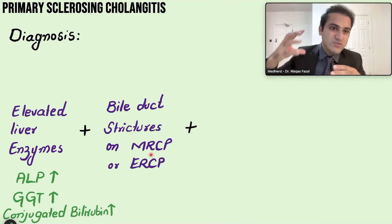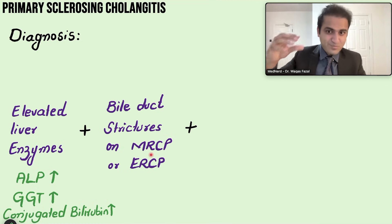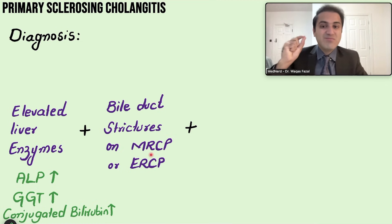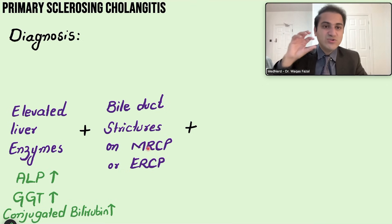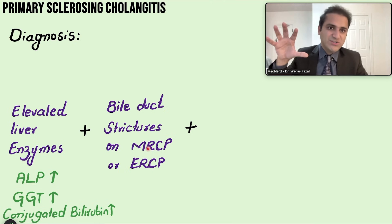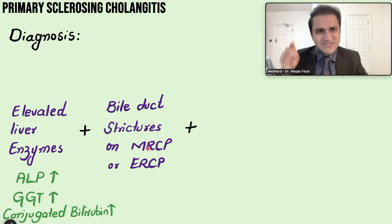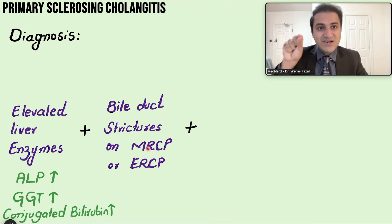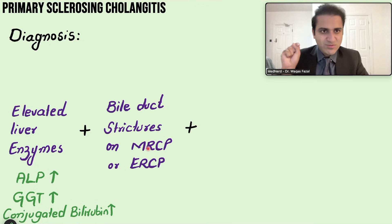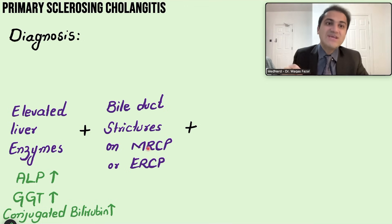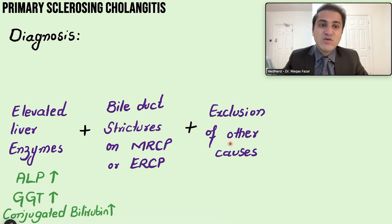In PSC patients, the dye cannot travel properly due to fibrosis and strictures. On MRCP you will see bile duct strictures. MRCP is a diagnostic procedure, while ERCP is both diagnostic and therapeutic — in ERCP, you enter the ducts and can open up the strictures causing obstruction.